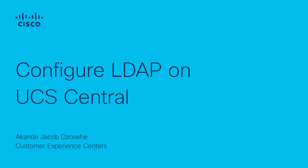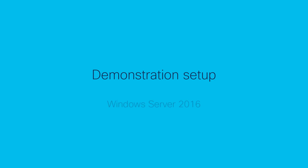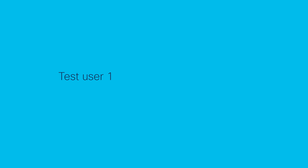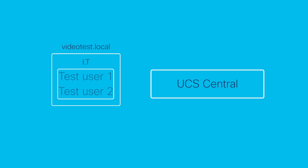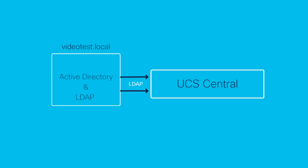For this demonstration, this is the setup: an instance of Windows Server 2016 and a UCS Central Appliance software version 2.0.1s. Two users, Test User 1 and Test User 2, are configured as members of the IT group within the VideoTest.local domain in a Windows Active Directory environment to manage a UCS Central appliance. Both users will use LDAP services to authenticate, granting them access to UCS Central.